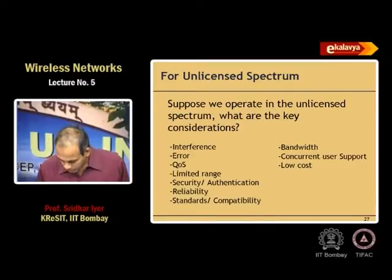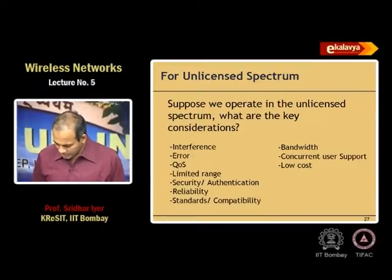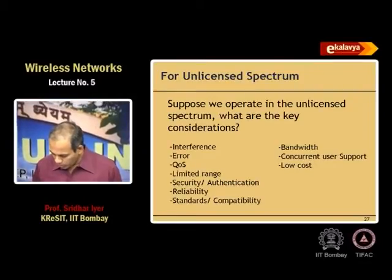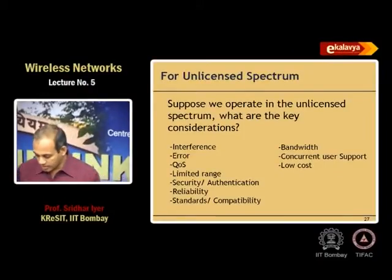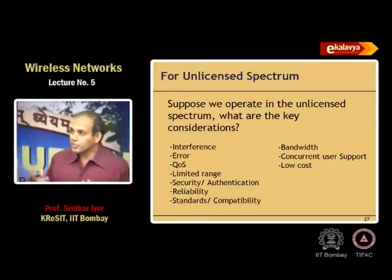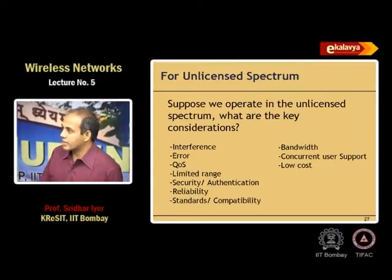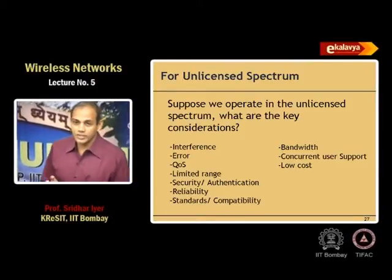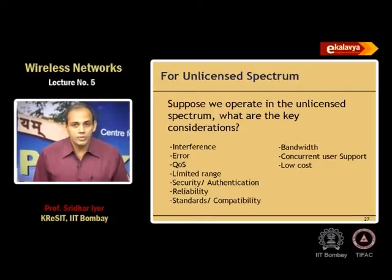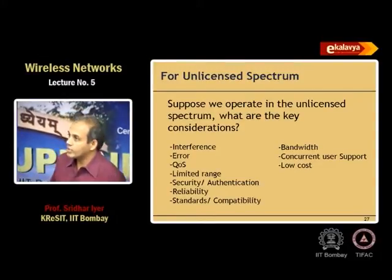The key consideration is always cost. Yesterday's cost was the spectrum itself. In a GSM licensed spectrum system, since we are paying so much for spectrum, spectral efficiency — packing the maximum number of users into the system — is the key constraint. Having more expensive equipment is acceptable. A base station costs upwards of $10,000 to $100,000.